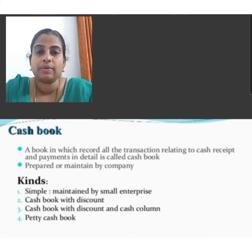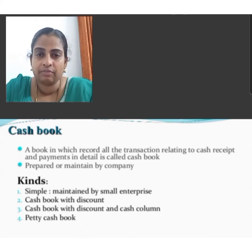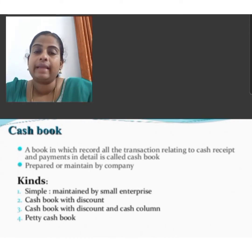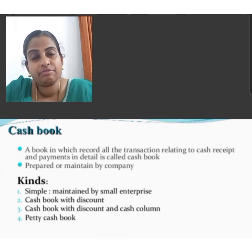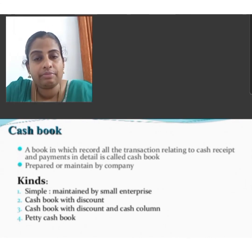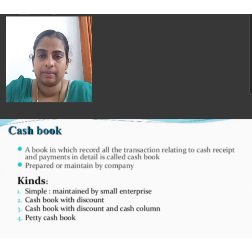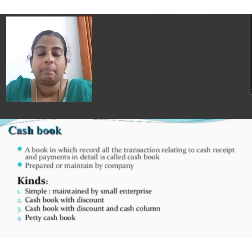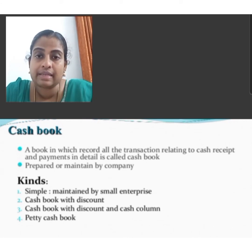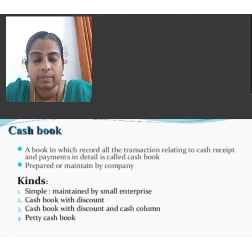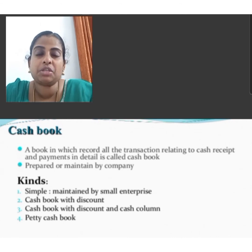Double column cash book is a book in which we record both cash transactions and bank transactions. For example, money deposited in bank, withdrawal of money from bank, etc. It also records any payment made by the company through check, such as salary paid by check, interest paid by check, and commission paid by check.